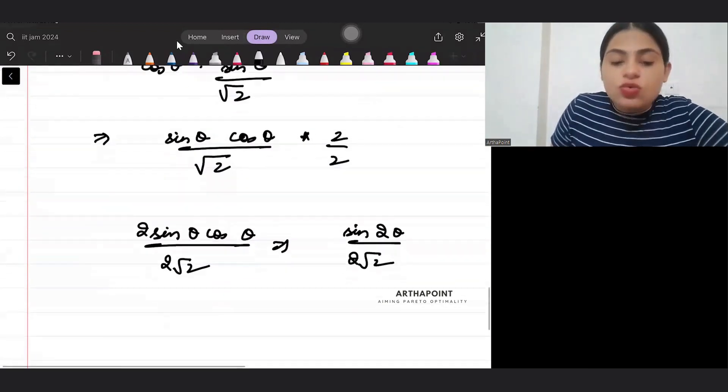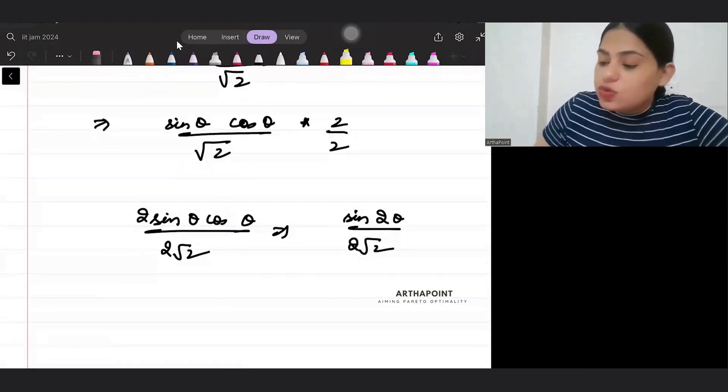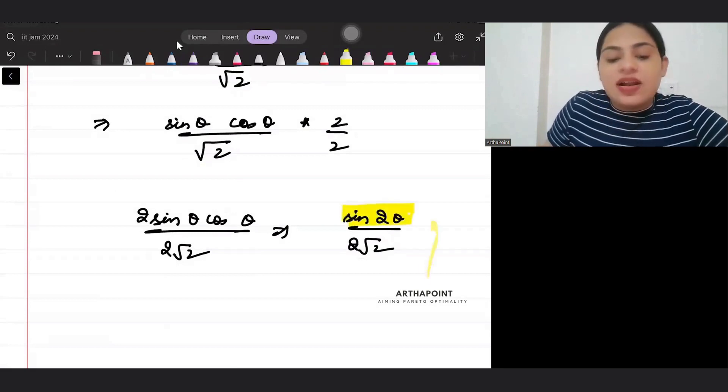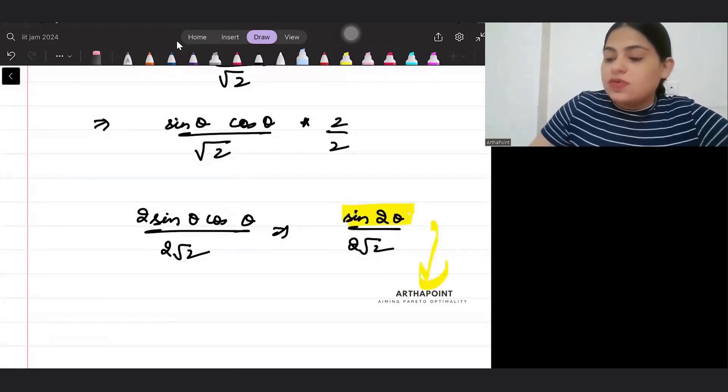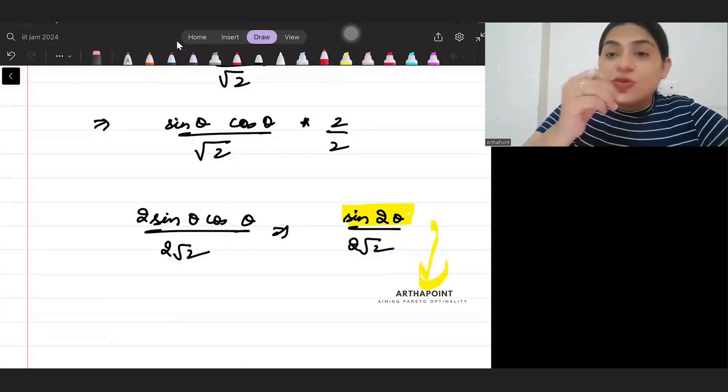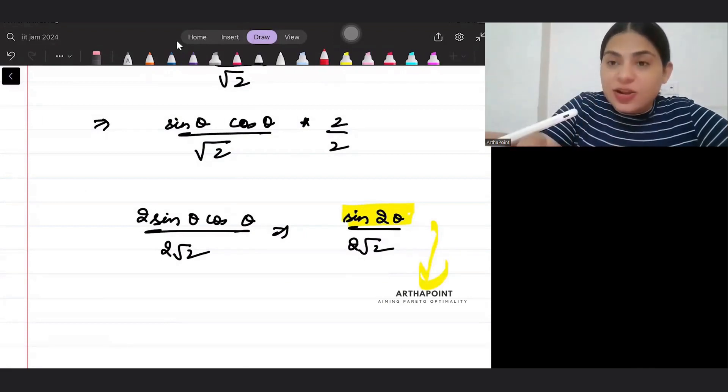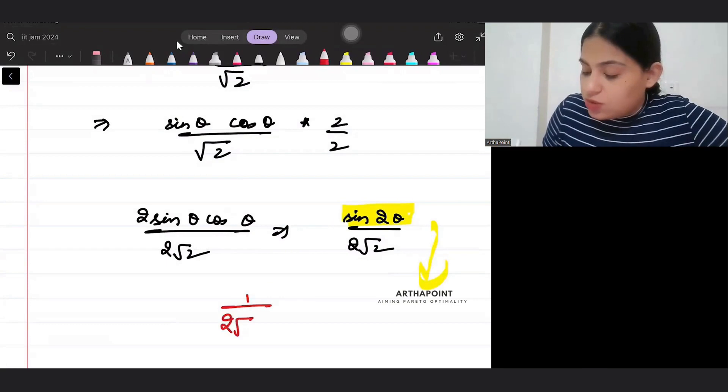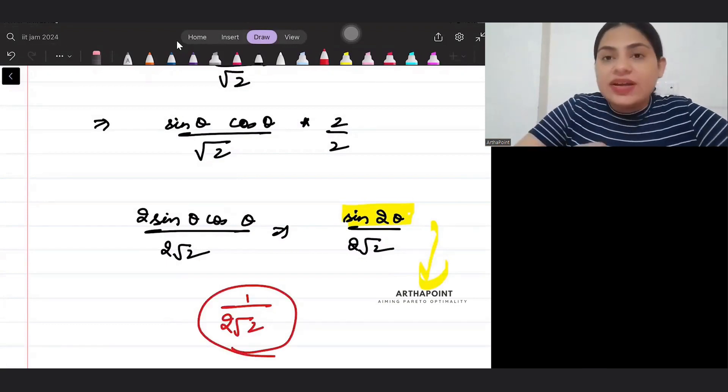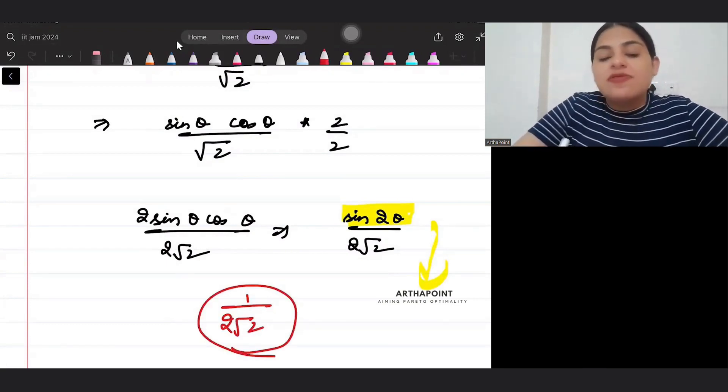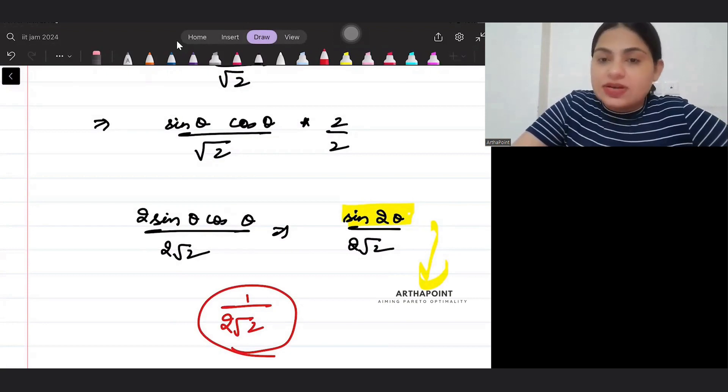And we know that this takes, sin 2 theta takes the maximum value of, we know that this takes the maximum value when this is going to be 1 by 2 root 2.